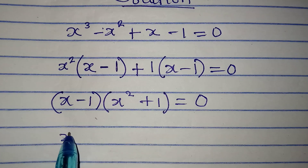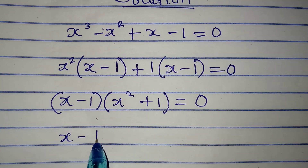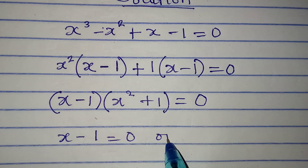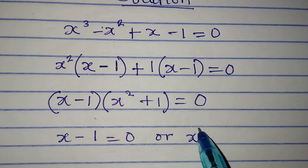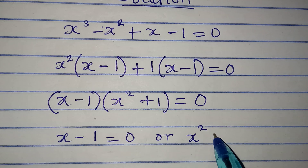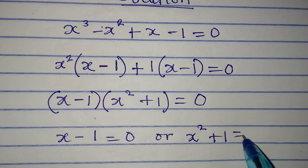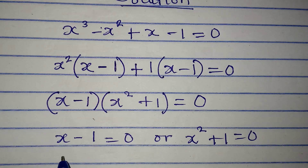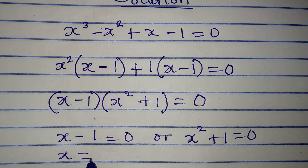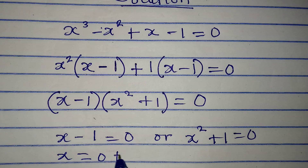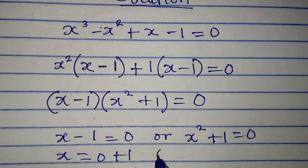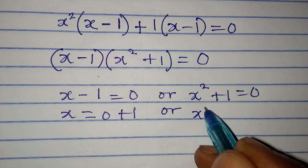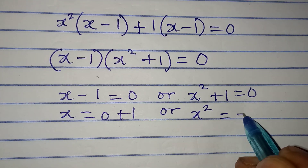And this is the point where we use the zero product property, which says it is either x minus 1 is equal to 0, or x squared plus 1 is equal to 0. From here, x will be equal to 1.